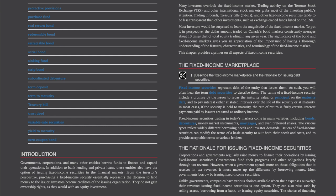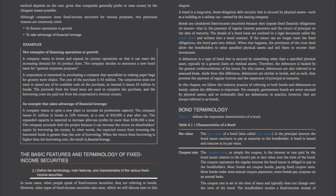The Rationale for Issuing Fixed Income Securities: Corporations and governments regularly raise money to finance their operations by issuing fixed income securities. Governments fund their programs largely through tax revenue; however, when a government spends more than it receives in tax revenue, it must make up the difference by borrowing money. Unlike governments, companies have various choices when their expenses outweigh their revenue — issuing fixed income securities, selling assets, borrowing from a bank, or issuing equity securities. The choice depends on cost, as companies generally prefer to raise money by the cheapest means possible.